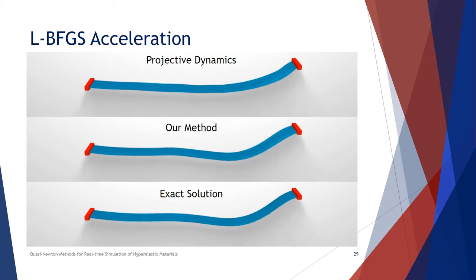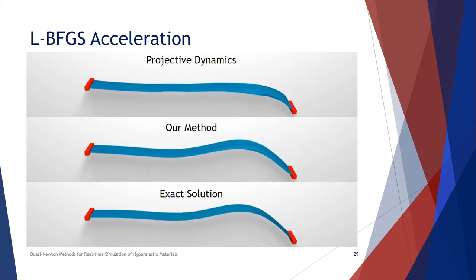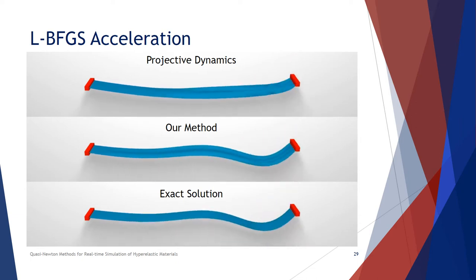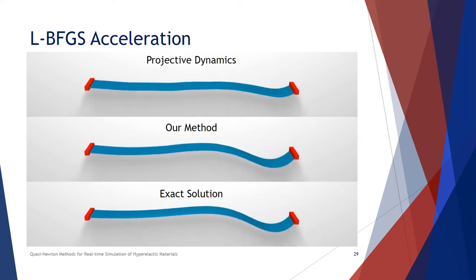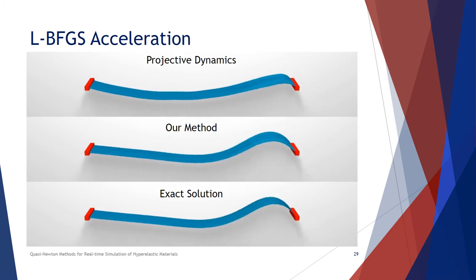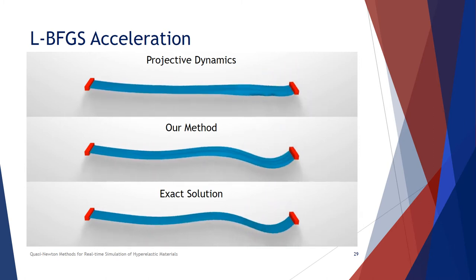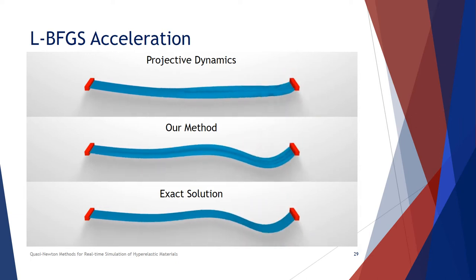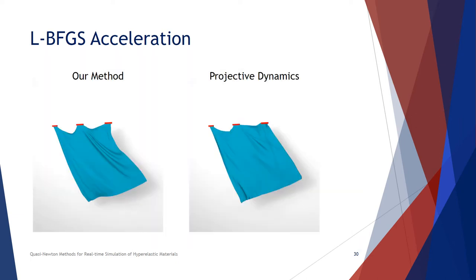We construct a test case of cloth simulation by holding the left end and shaking the right end. Both our method and projective dynamics are running 10 iterations per frame. As you can see, our method in the middle resembles the exact solution on the bottom more, while projective dynamics damps the motion more when not converged well. Other than this contrived case, this artifact of projective dynamics will be reflected in high frequency components in more realistic simulations, for instance, wrinkles in cloth simulation.